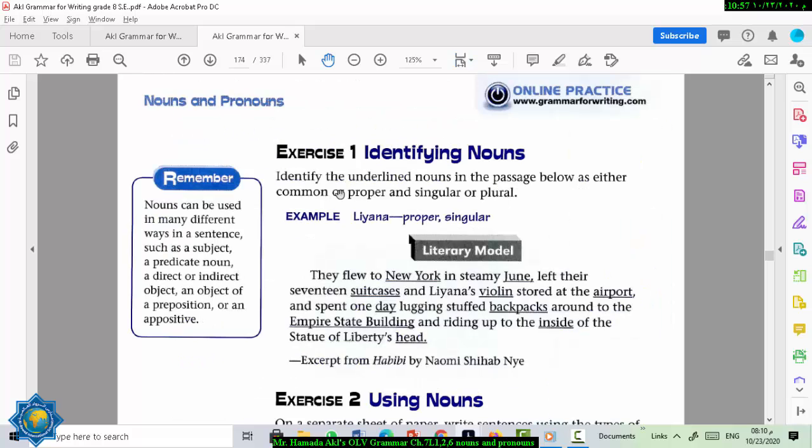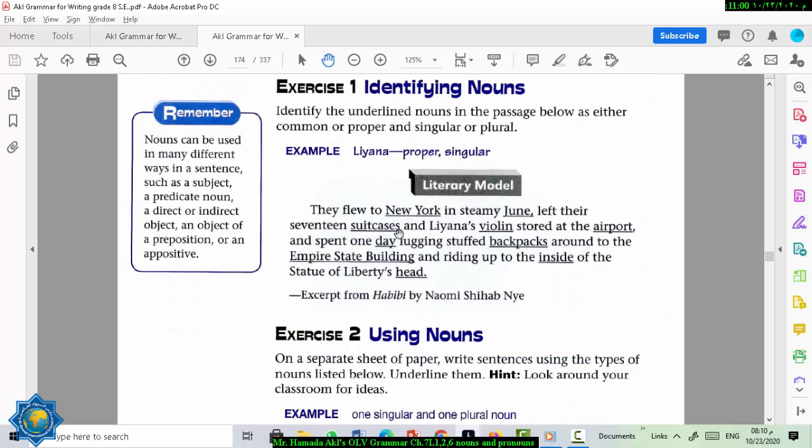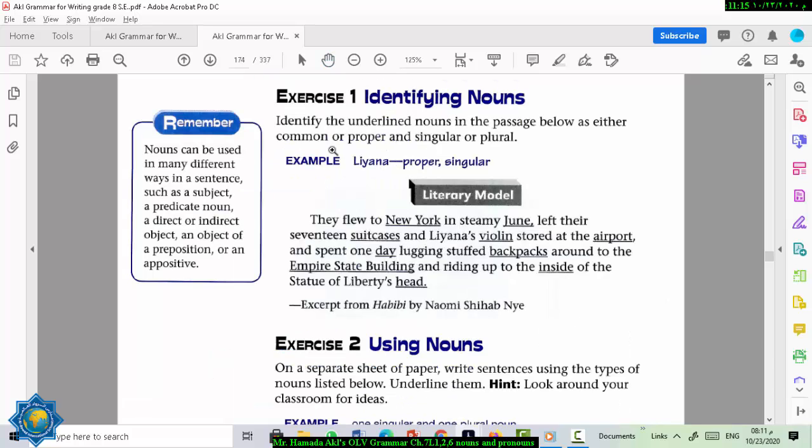Let's start the exercises in the next page. That is page 172. Identifying nouns. Identify the underlined nouns in the passage here below as either common or proper, singular or plural. For example, New York. Is it common or proper? Think. Exactly. It's proper because it's capitalized. Is it singular or plural? Excellent. It's singular because it refers to one place.